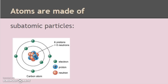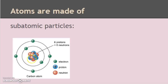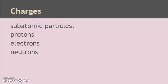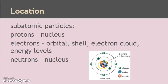Atoms are made of three subatomic particles: electrons, protons, and neutrons. The nucleus is not a subatomic particle — it is just where the protons and neutrons are located. Protons have a charge of positive 1, electrons are negative 1, and neutrons are neutral or 0 — no charge. Protons and neutrons are in the nucleus, the center of the atom. Electrons travel around on the outside in orbitals, shells, the electron cloud, or energy levels.